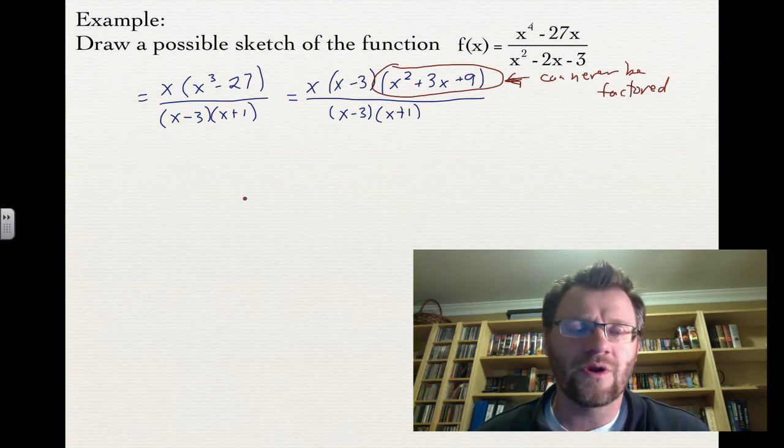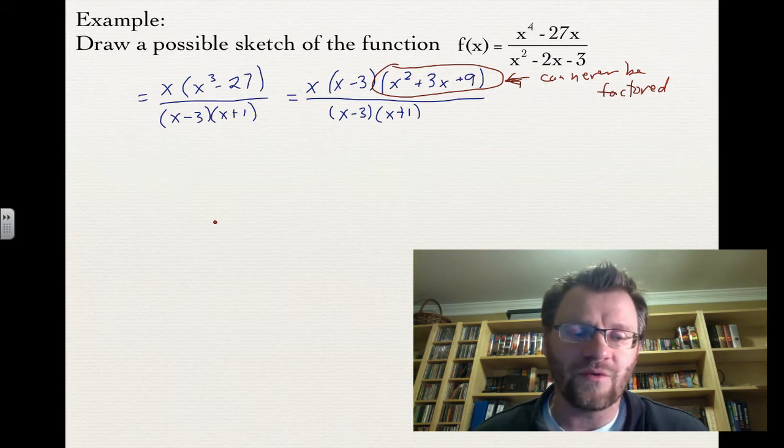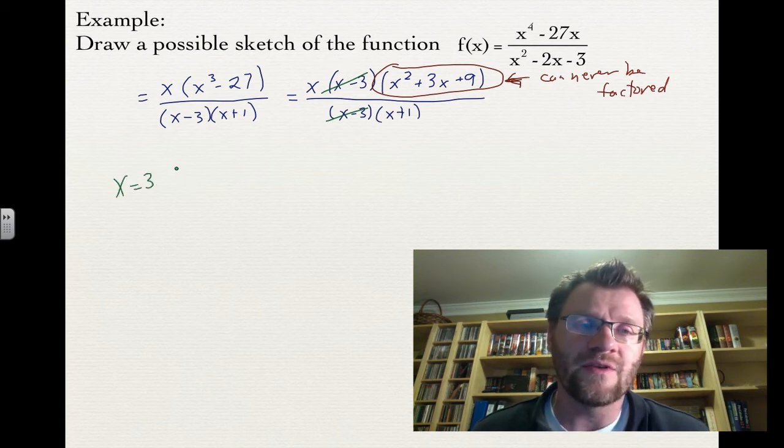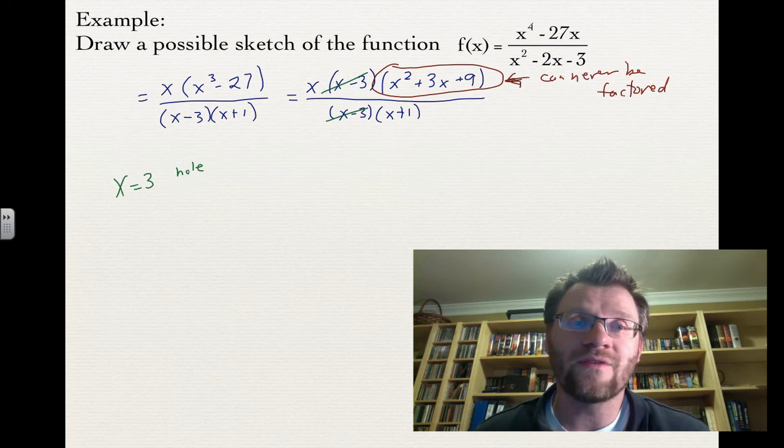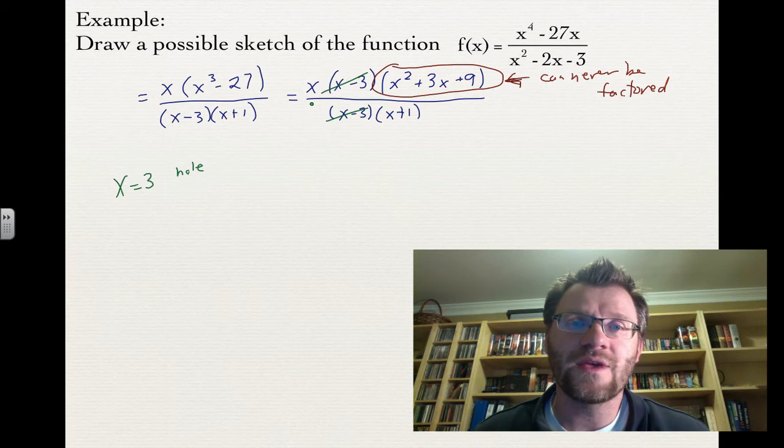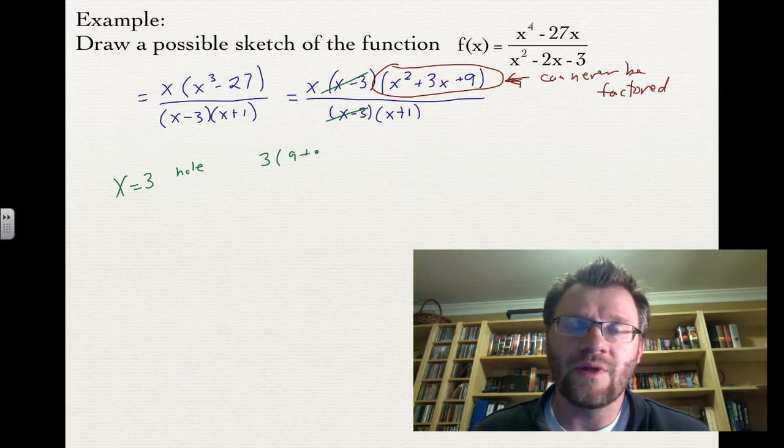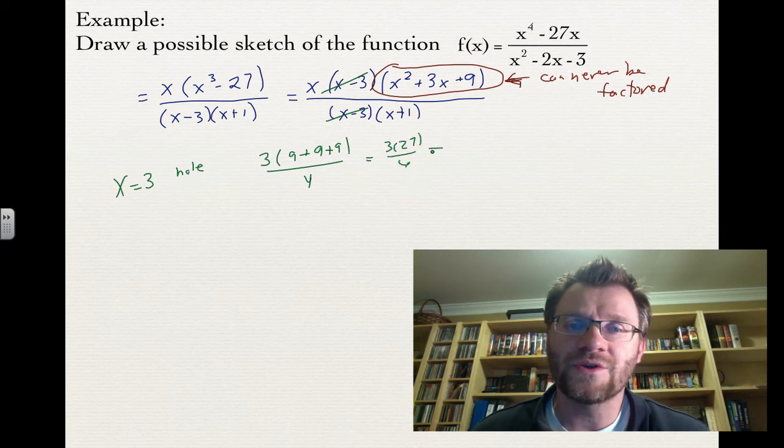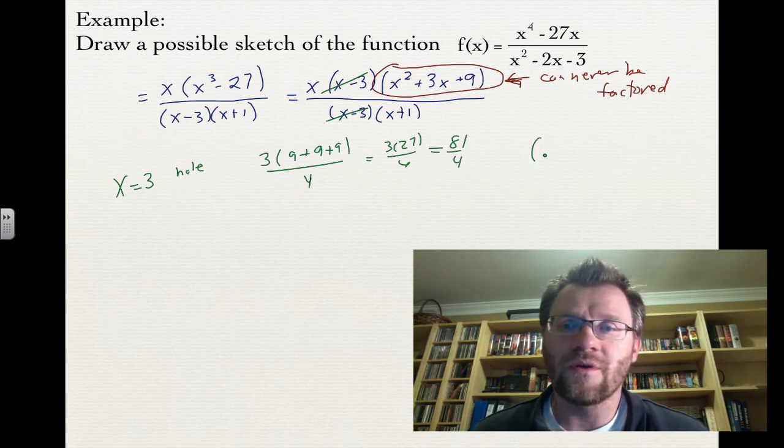If we're going to draw a sketch, we need to know where the zeros, asymptotes, and holes are. First, we look for the hole in the graph. That's any factor that cancels out at the top and bottom. That's x minus 3. So x equals 3 means there's a hole. To find the y value, we cancel out x minus 3 and plug 3 into the remaining function. That's 3 times (9 plus 9 plus 9) over 4, which is 81 over 4. So your hole is at 3, 81 over 4, which is like 20 and a quarter.